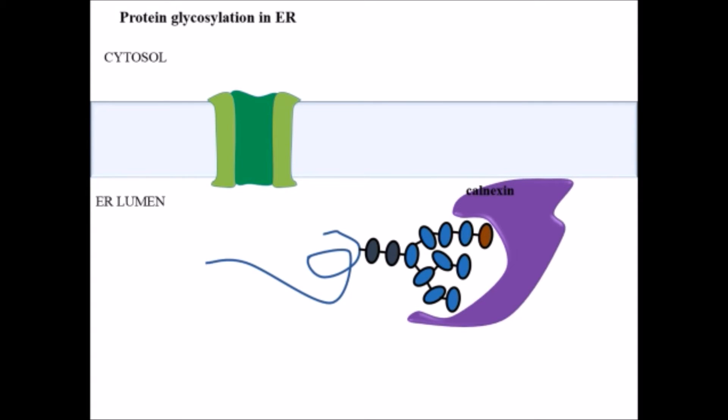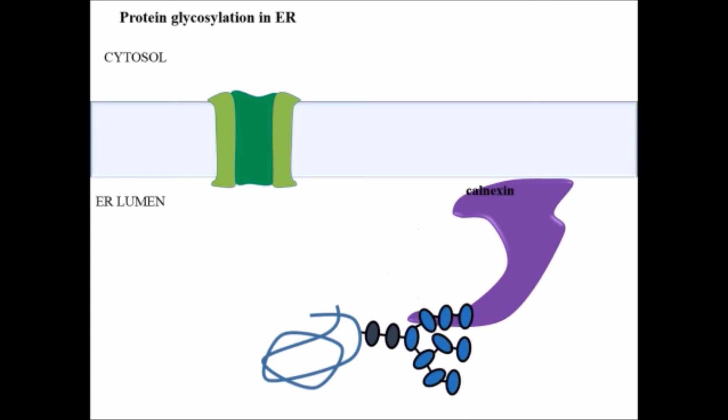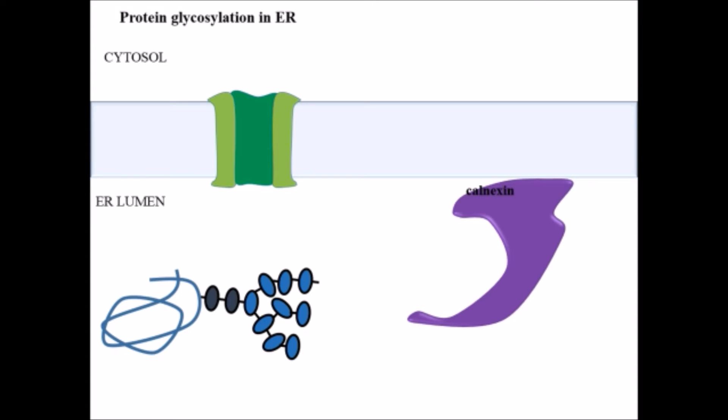After internalization, it is recognized by the calnexin protein, which helps in the proper folding of the protein. If the protein is in proper conformation or properly folded, then it will be transported to the Golgi body for further glycosylation.